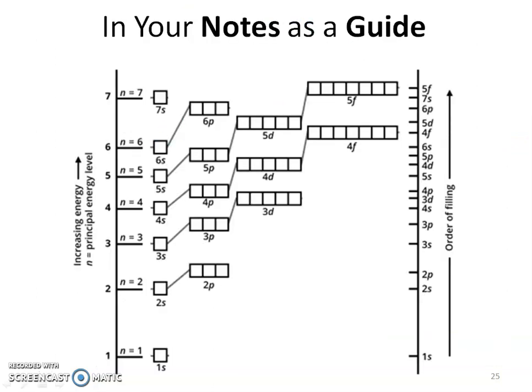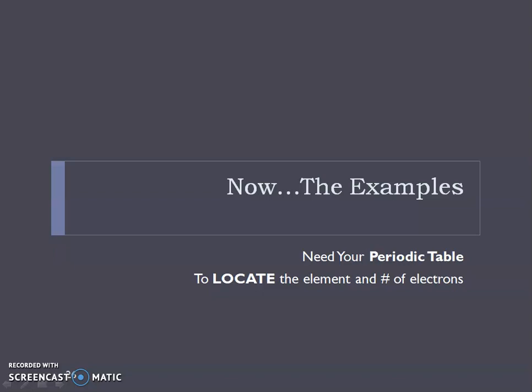In your notes, use the diagram as a guide — your cheat sheet. Start with the 1S and follow the energy level order. Make sure you're following the amount of energy and not just the numbered boxes. Now let's look at some examples. If you don't already have your periodic table, get it — we'll need to locate each element and figure out how many electrons it has to fill the orbital filling diagram correctly.